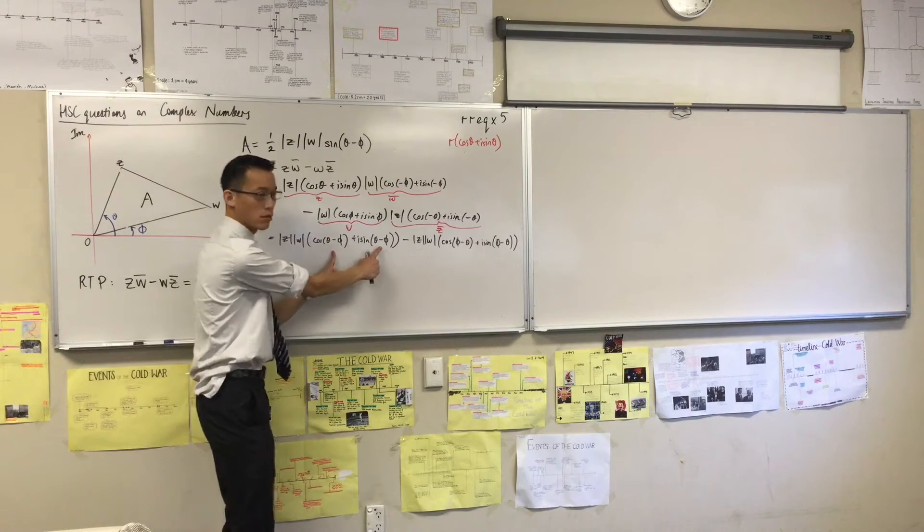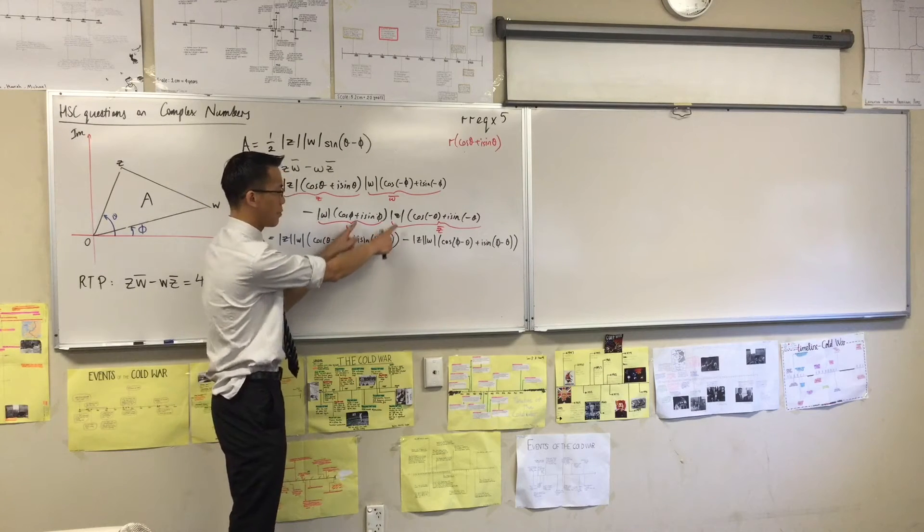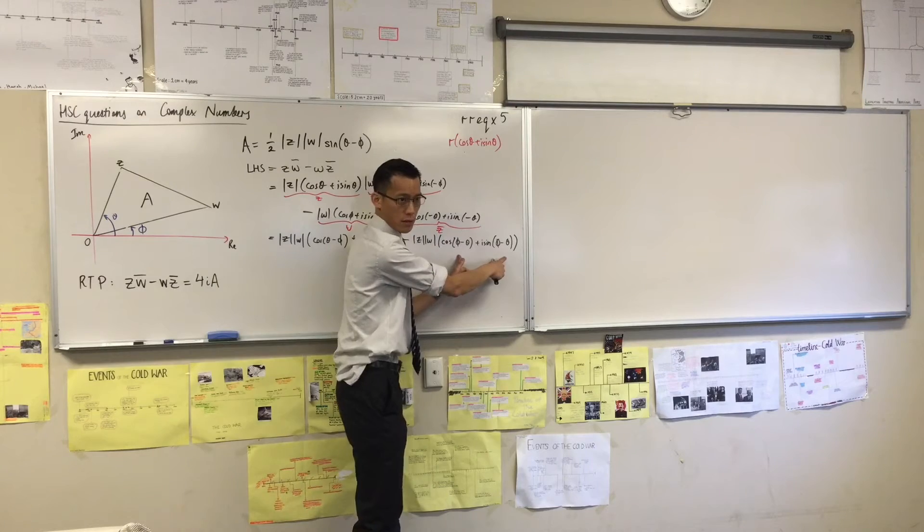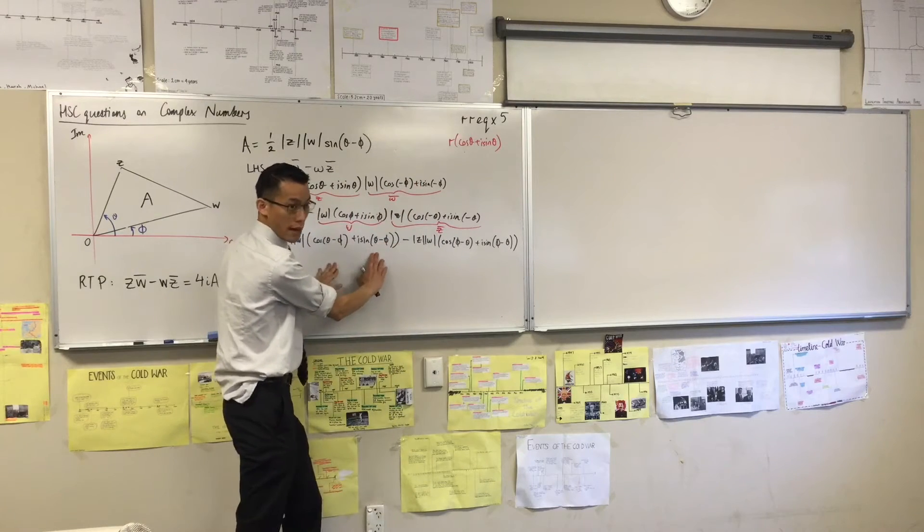I've got theta minus phi. Now, we noticed that these looked good, and then we computed these and noticed they're backwards. So these I'm going to leave where they are.